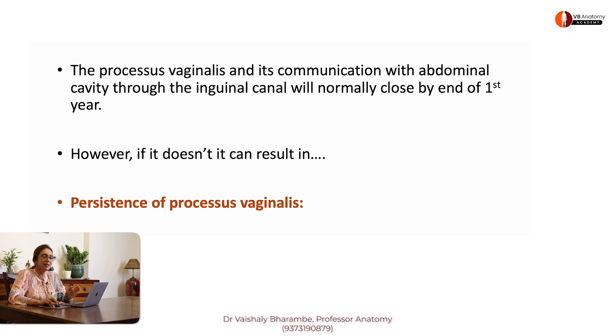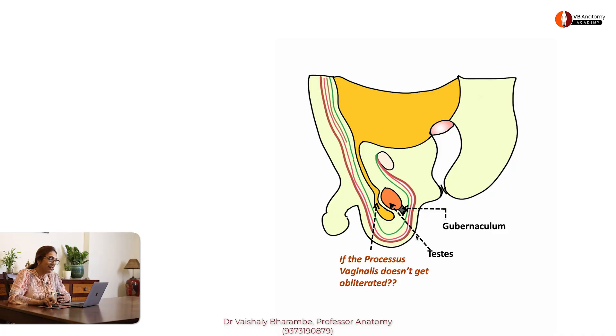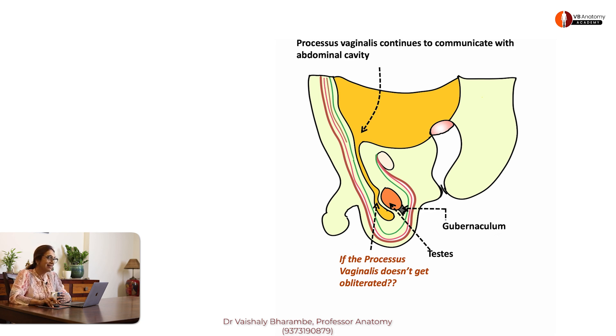Normally the processus vaginalis is obliterated by the time the child is born. But if it doesn't happen — if the processus vaginalis persists — let's take a look at what happens. That's the abdominal cavity, that's the patient's scrotum, and that's the unobliterated processus vaginalis, which is communicating freely with the abdominal cavity.